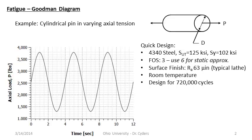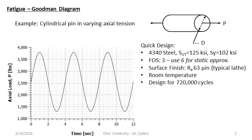The best way to go over the Goodman diagram is to walk through a design example. We're designing a pin to be put in axial tension with no special stress concentration features. Load P varies over time. Because we haven't selected the diameter yet, we can't specify alternating and mean stresses, but we do have an alternating and mean force. The load on this pin is 2,540 pounds plus or minus 1,260 pounds — varying from about 3,800 pounds down to about 1,300 pounds.